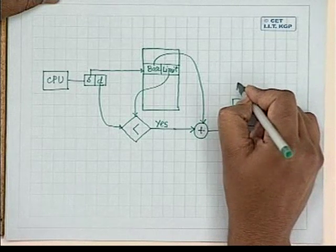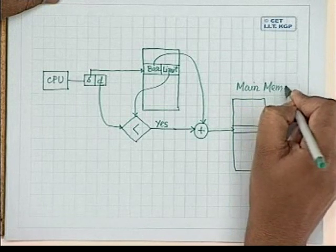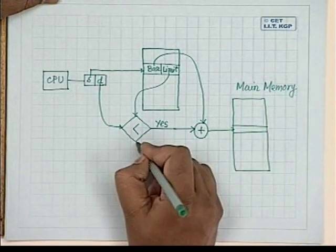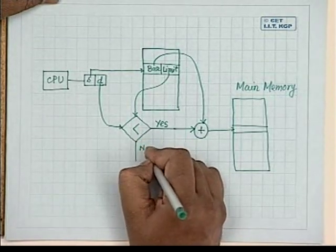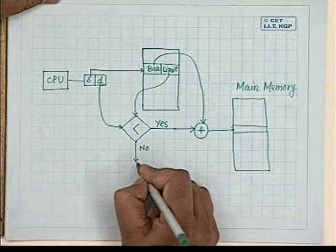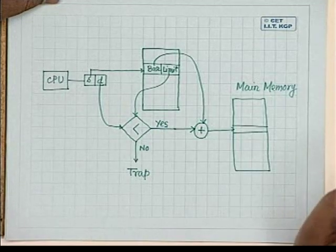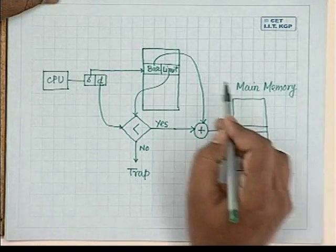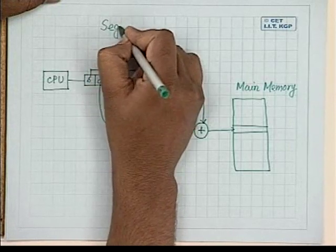If D is not less than limit, there must be an interrupt and the program is terminated. This is the overall scheme of segmented memory management — using a segment number and offset to access the correct physical memory location via the segment table.